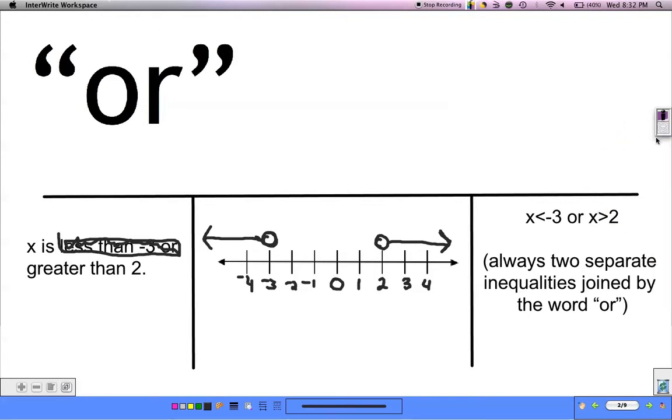And when we write it as an inequality, we just write the inequality exactly the way you would read it. X is less than negative 3 or the word 'or', x is greater than 2. So we want to join those two separate inequalities with the word 'or'.